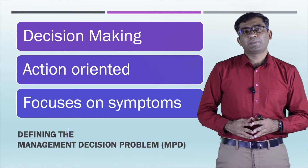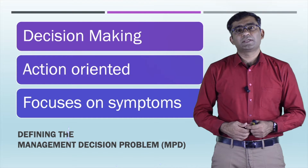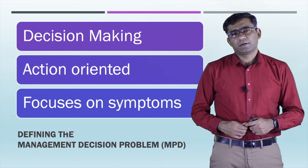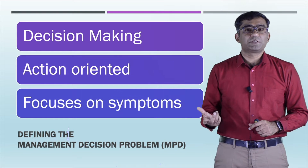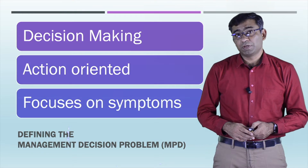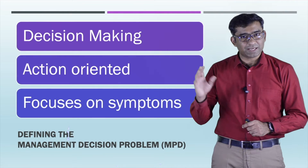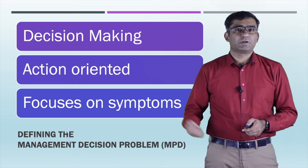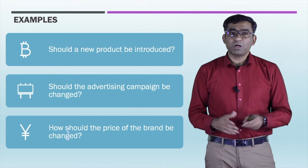So the management decision problem is symptom-oriented — it shows a variation in your sales, maybe a decrease over the year, or maybe you're facing challenges like rapid technology changes, new product needs, or market competition. These are all symptoms — signals from the market when the decision-making process needs to be initiated. Three major things in MDP: first, it is a decision-making process; second, it is action-oriented; third, it is symptom-based.